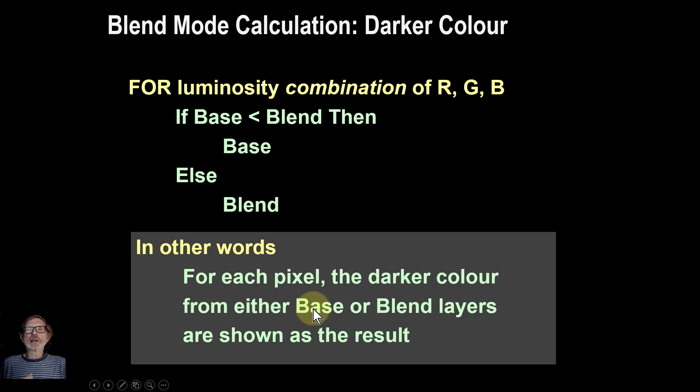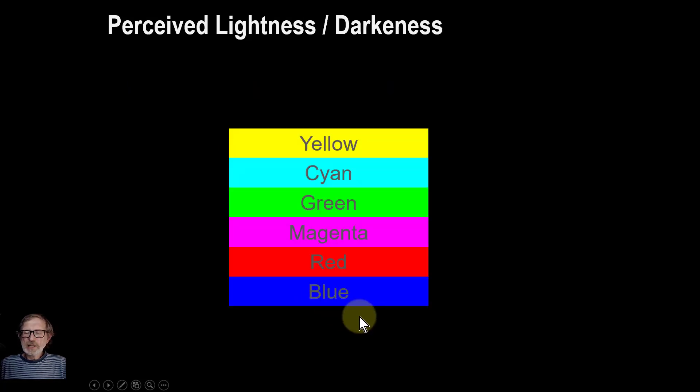The question is how do you decide whether colors are darker or lighter? You can do it by looking at this. Here you go from blue all the way through to yellow and each one is getting lighter and lighter. There's a formula that is used with that which I'm going to talk about in the next video on the calculations. But for now you can just see that some colors are lighter and darker perceptually, because this is what you're seeing, than others.